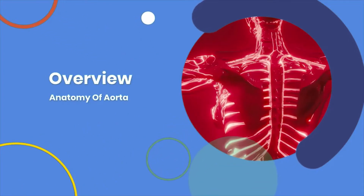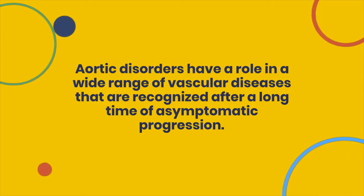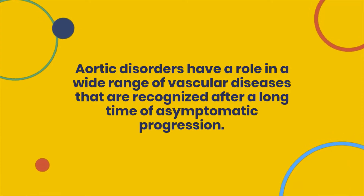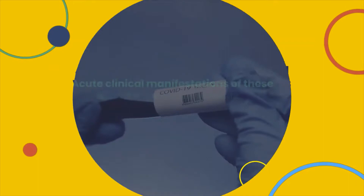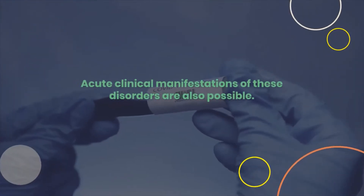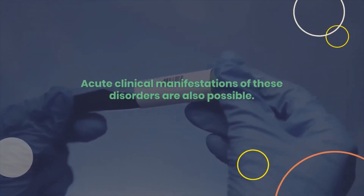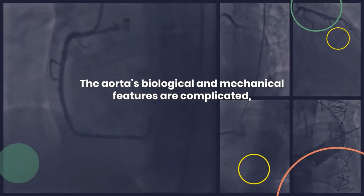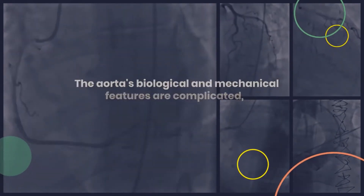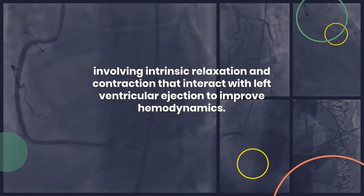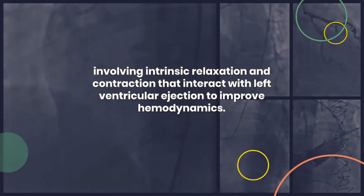Aortic disorders have a role in a wide range of vascular diseases that are recognized after a long time of asymptomatic progression. Acute clinical manifestations of these disorders are also possible. The aorta's biological and mechanical features are complicated, involving intrinsic relaxation and contraction that interact with left ventricular ejection to improve hemodynamics.